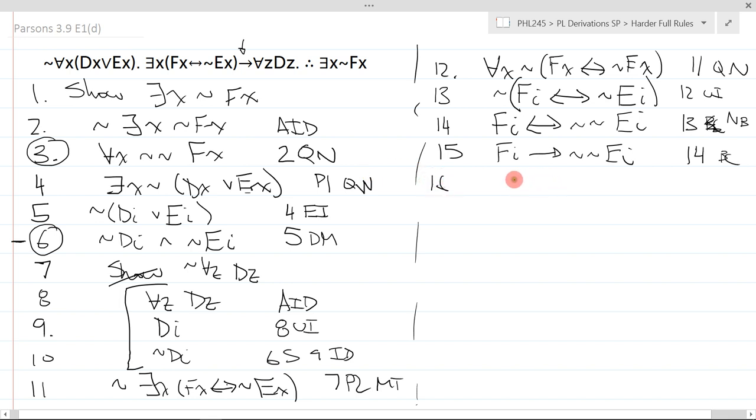And on line 16, I will generate the ridiculous not not not EI. How? Six simplify double negate. This lets me modus tollens to get not FI.